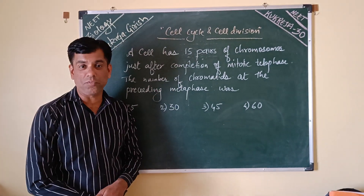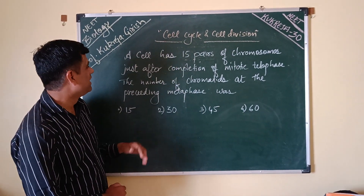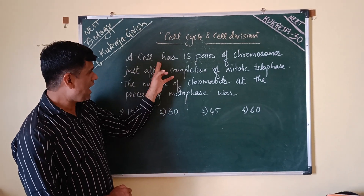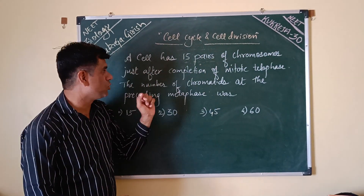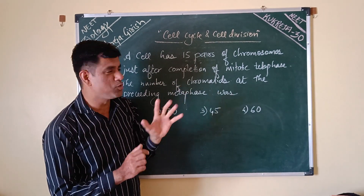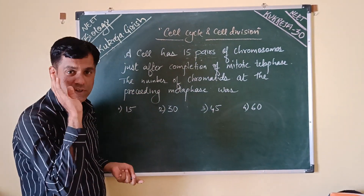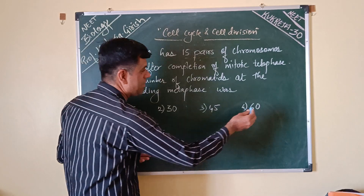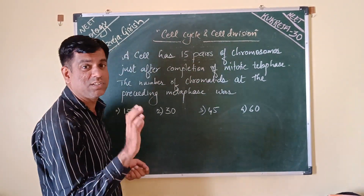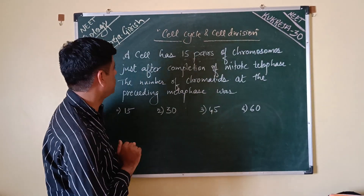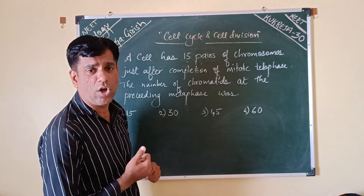Hi friends, you're back with me, Professor Girish Kukreja, and here we are with today's question. A cell has 15 pairs of chromosomes — so there are 15 pairs of chromosomes, which means 30 chromosomes total. Just after the completion of mitotic telophase...